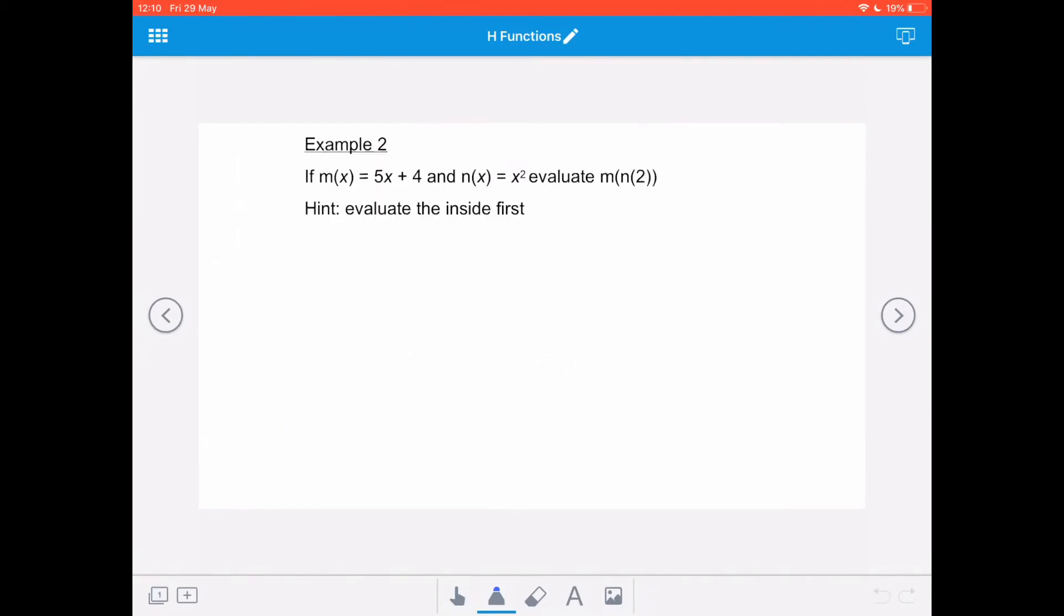So in our second example, if m of x equals 5x plus 4 and n of x equals x squared, I want to evaluate m after n of 2. So I'm going to evaluate the inside first. So I want to work out what n of 2 is, and then I'm going to substitute that value into my m of x function in order to work out what m of n of 2 is, or m after n of 2.